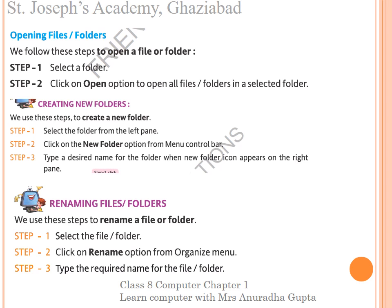Next, how to create a new folder in Windows Explorer. These are the steps to create a new folder. Step 1: select a folder from the left pane. Step 2: click on New Folder option from menu control bar. Step 3: type a desired name for the folder when the new folder icon appears on the right pane.